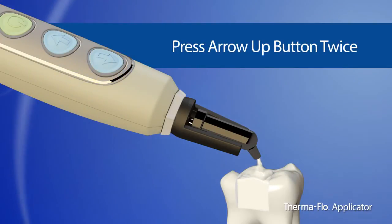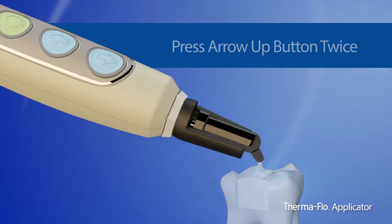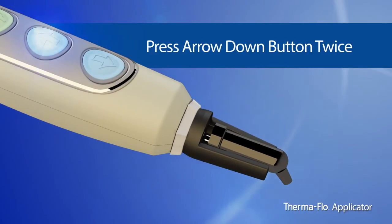When the capsule is empty, press the down arrow twice and the handpiece will automatically retract to a ready-to-use position.